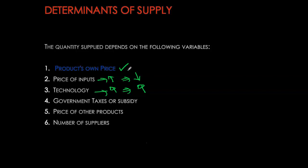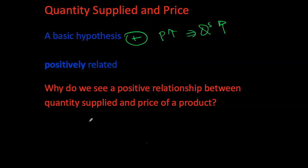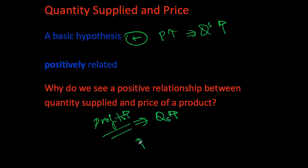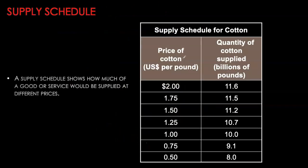We want to focus on the relationship between price of the product and quantity supplied. In this case we see a positive relationship, because producers always care about profits — anything that causes profitability to go up, they are willing to supply more. As price rises, holding everything else constant — your ceteris paribus condition — quantity supplied will be higher.